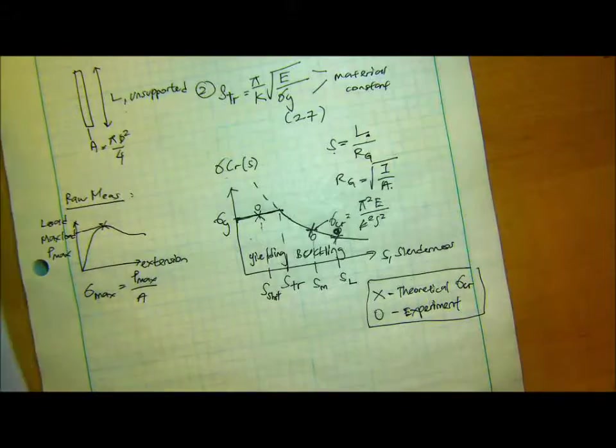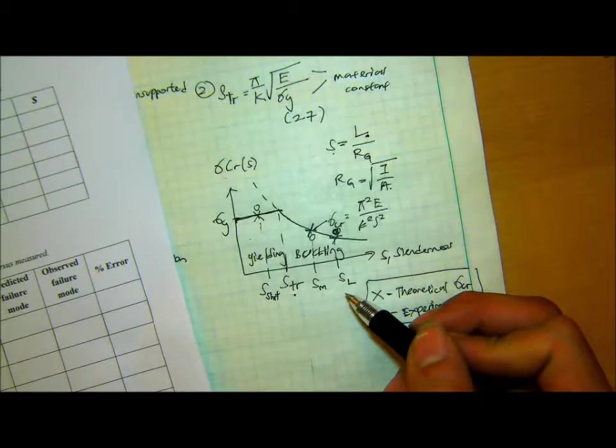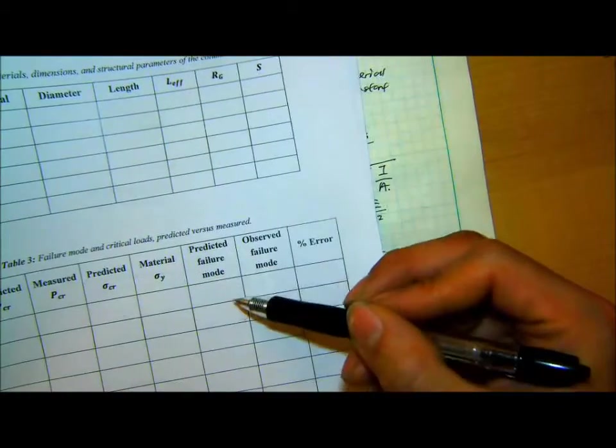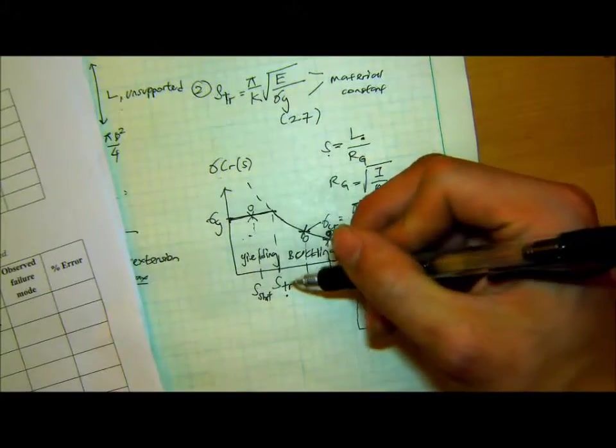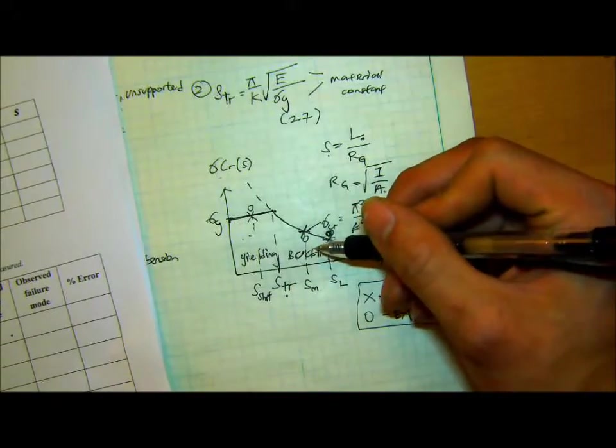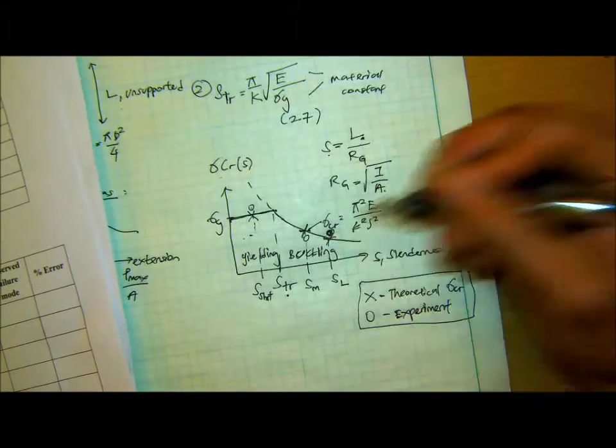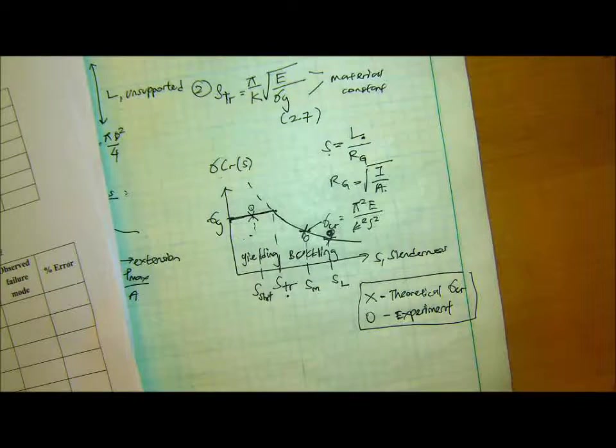So when you put it in a table, right, once you calculate the STR, and you calculate the respective S of the sample, if it falls on the left-hand side of this region, then we say predicted failure mode: yielding. And then if it's on the right-hand side of STR, then we predict it to buckle. And then we confirm it with our observation, true or not. And the error is basically the difference here. Difference between the measured and the theoretical critical stress.